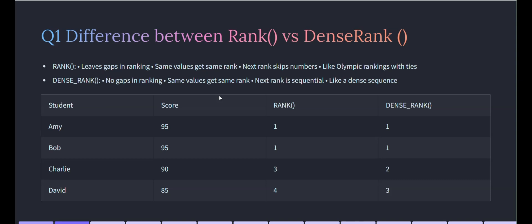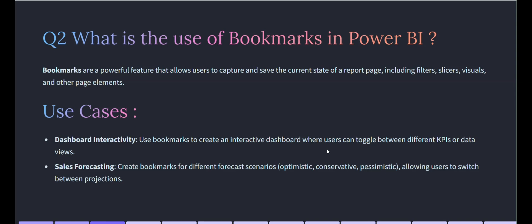We have sample data here with student scores, a RANK column, and a DENSE_RANK column. You can see the scores have ties between Amy and Bob. With RANK, the second rank is skipped when there's a tie. But with DENSE_RANK, the second rank will not be skipped when ties happen. That's the basic difference. You can create a table like this in front of the interviewer to illustrate the concept.